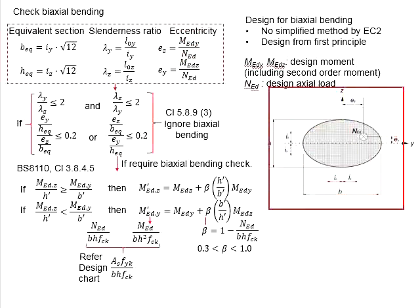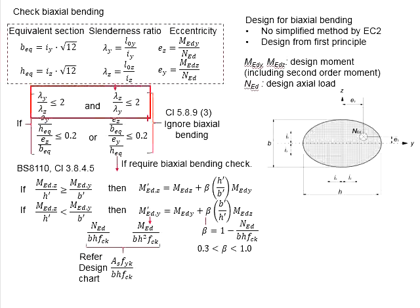These figures illustrate the information for the eccentricity as well as the b and h of the section. The checking on the slenderness ratio is between lambda_y and lambda_z. Both lambda_y divided by lambda_z and lambda_z divided by lambda_y needs to be less than 2.0. That means no side of the axis will have the slenderness ratio significantly greater than the other axis.